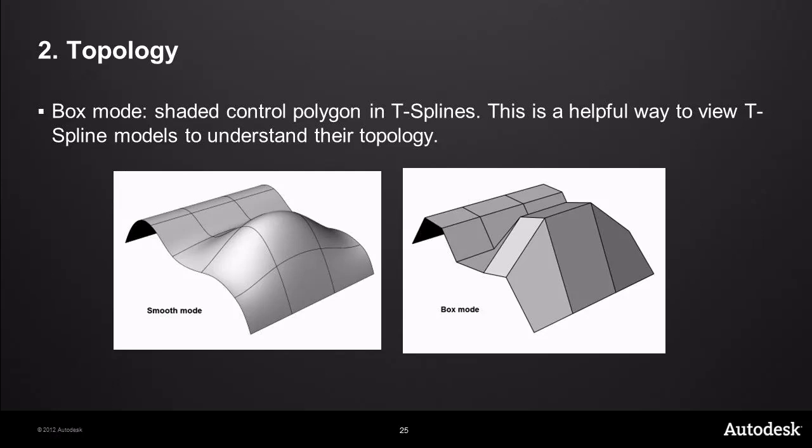In T-splines, there are two different ways of looking at your models: smooth mode and box mode. When I first started using T-splines, I was always looking at models in smooth mode because I figured that's what I should be looking at. The more I use T-splines, the more I model almost exclusively in box mode and then make one or two little tweaks in smooth mode. It's a lot easier to see what's going on with your topology in box mode, especially when models start to get really dense and complicated. I'd suggest new users try to use box mode as much as they can.